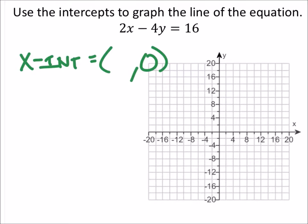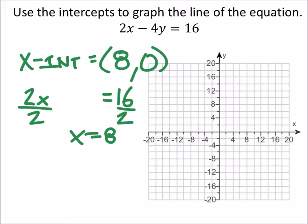When I solve this, I've got 2x minus 4y equals 16, but I'm replacing the y with zero. I usually just tell people to ignore that term altogether because 4 times zero is zero. Now I've got a pretty simple equation to solve by dividing both sides by 2, and I find my x is 8. So there's my x-intercept at (8, 0).